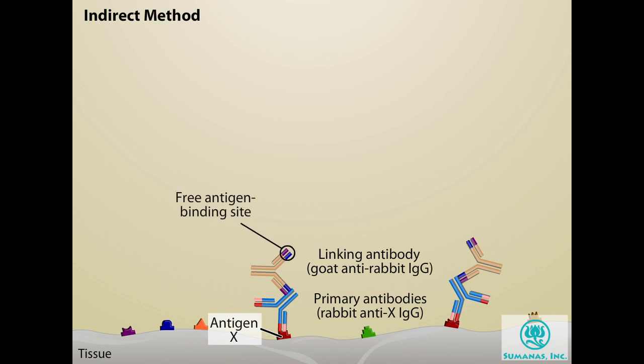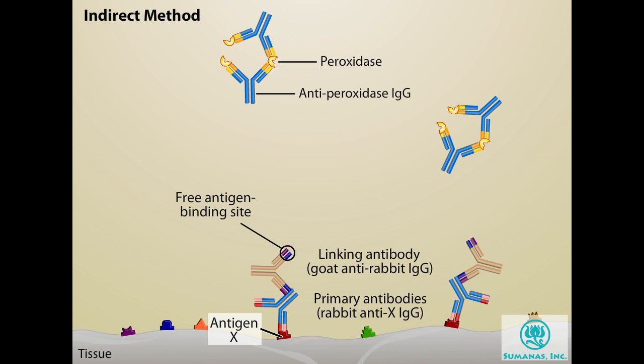The final step of this example of the indirect method uses a complex that consists of the peroxidase enzyme conjugated to an antibody that recognizes the peroxidase as an antigen. Note how the antibodies in the peroxidase antiperoxidase, or PAP complex, build on each other.